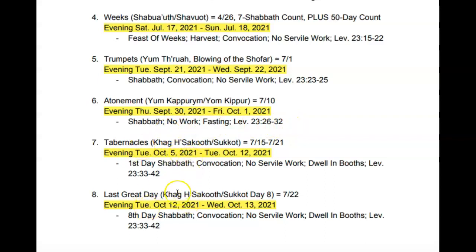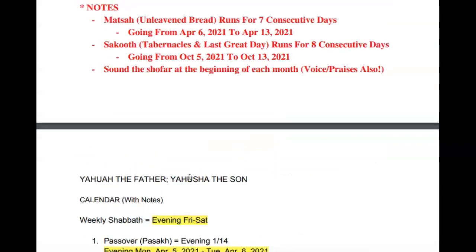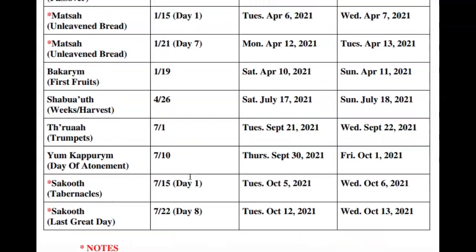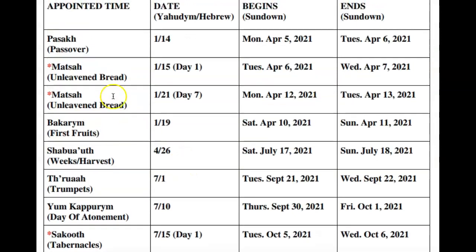Tabernacles with the Last Great Day runs for eight consecutive days from October 5th through October 13th, 2021. You're to dwell in booths such as a tent. The first and eighth days are to be Sabbaths with a convocation, and no servile work is to be done. You can learn more about that in Leviticus chapter 23, verses 33 through 42. This document lists all the appointed times — I will leave it in the description box below so you can print it out for your reference.